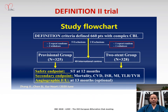This is the aim of our Definition 2 trial. We only included complex coronary bifurcation lesions defined by the definition criteria. The primary endpoint was target lesion failure at one-year follow-up, and the safety endpoint was stent thrombosis.